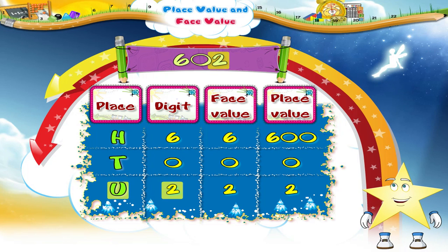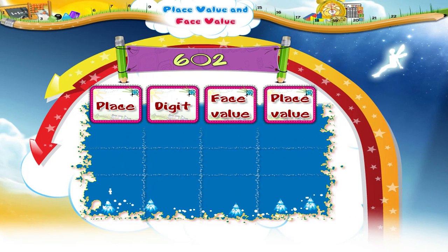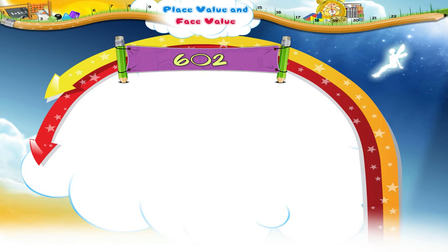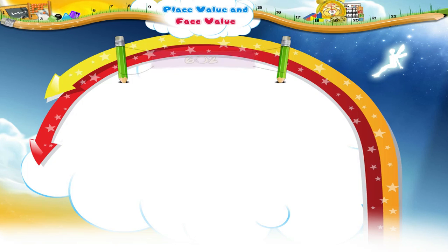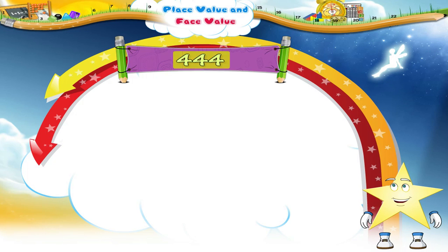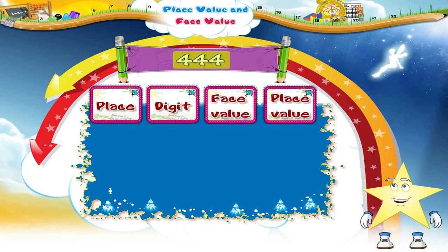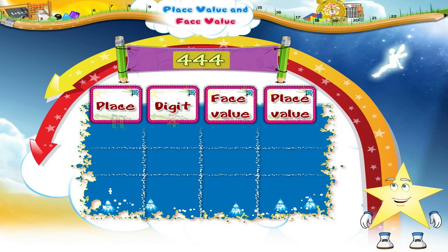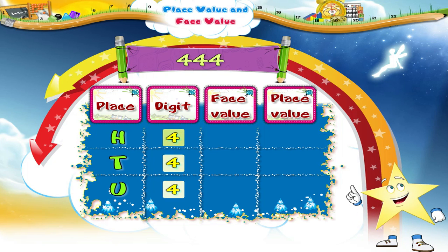Interesting, isn't it Starry? Now look at this amazing number: four hundred and forty-four. It has three fours, so the face value of each four is four.